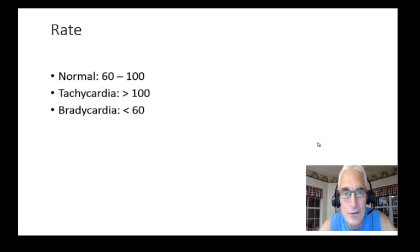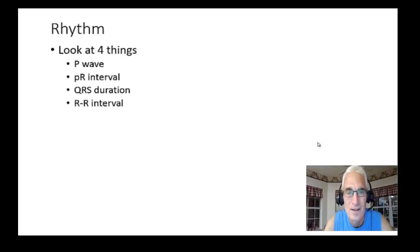First, we're going to deal with the rate. The rate, normal is between 60 and 100. Greater than 100 is tachycardia, too fast. Bradycardia, less than 60, is too slow. All right, that's the rate.